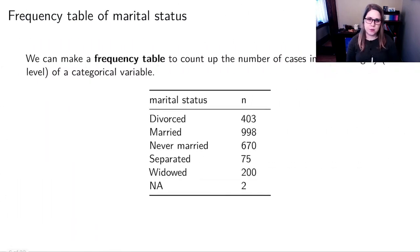And for one categorical variable, the summary statistic that we see the most often is a frequency table. So in a frequency table, you just count up the number of cases in every single category. So you might have different levels or categories of your categorical variable.